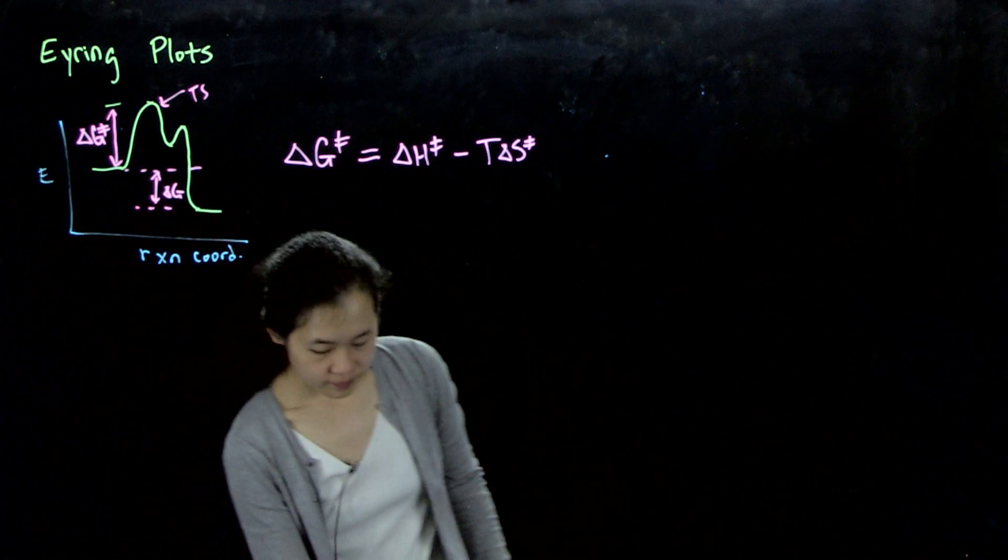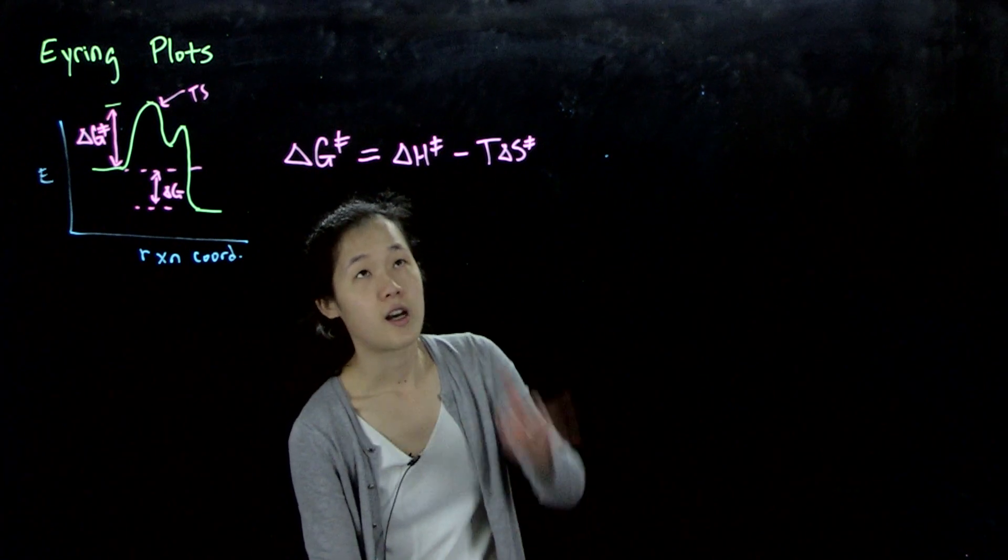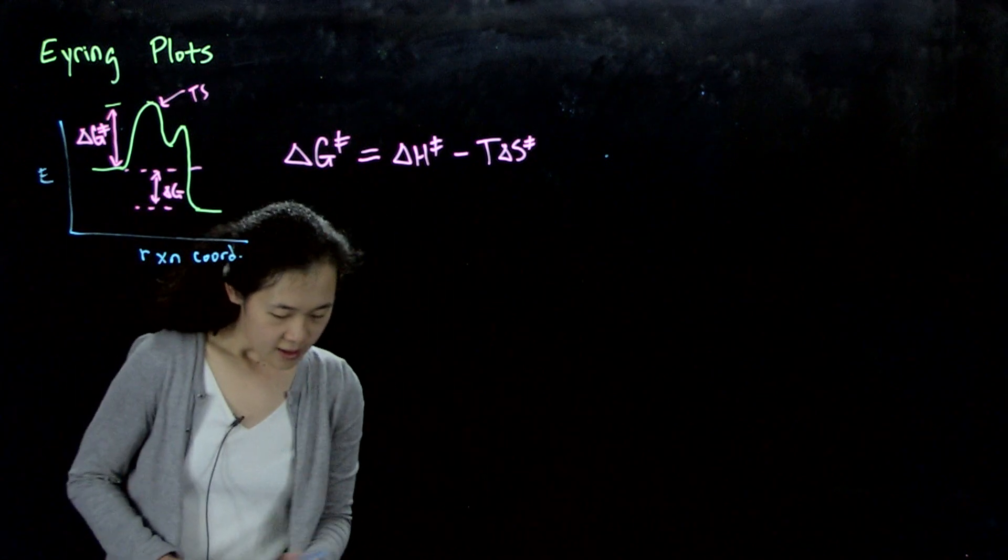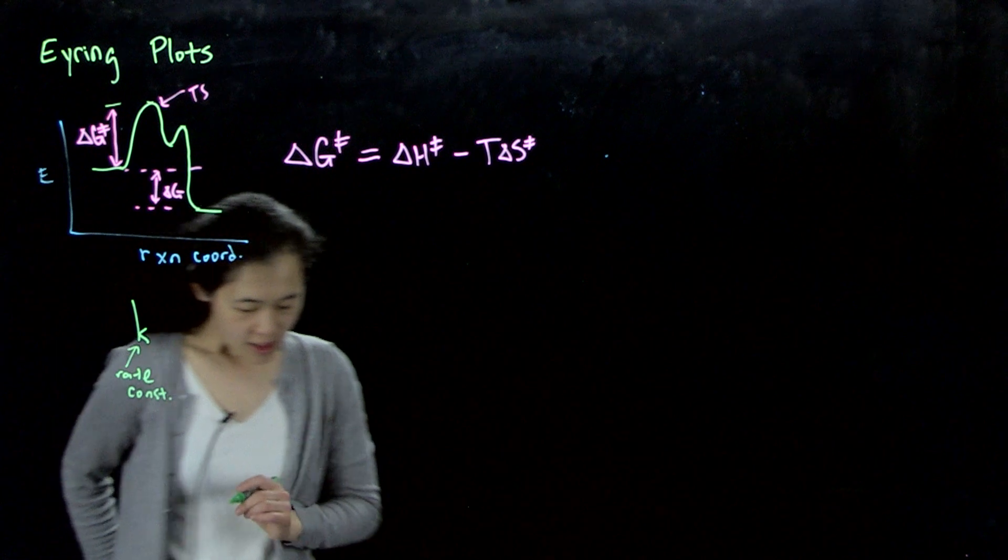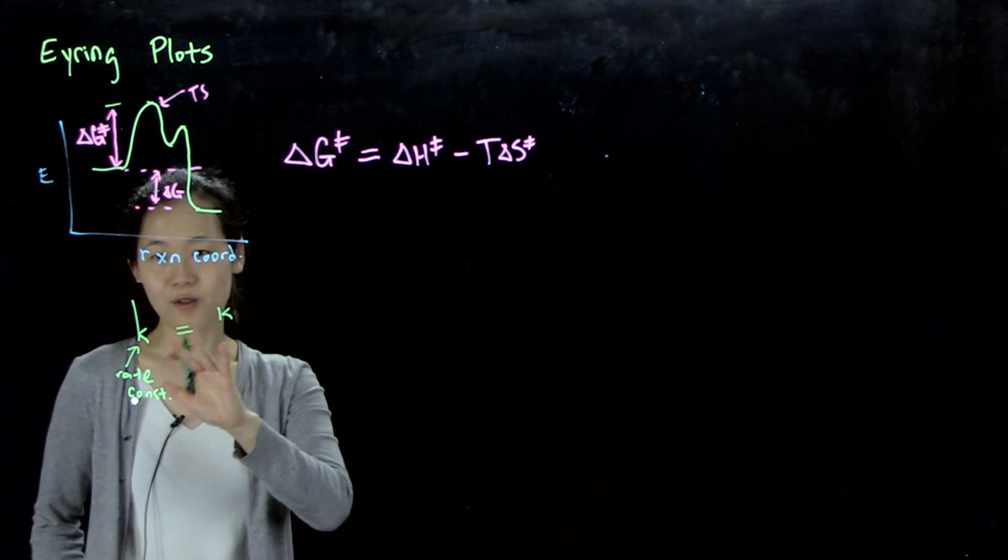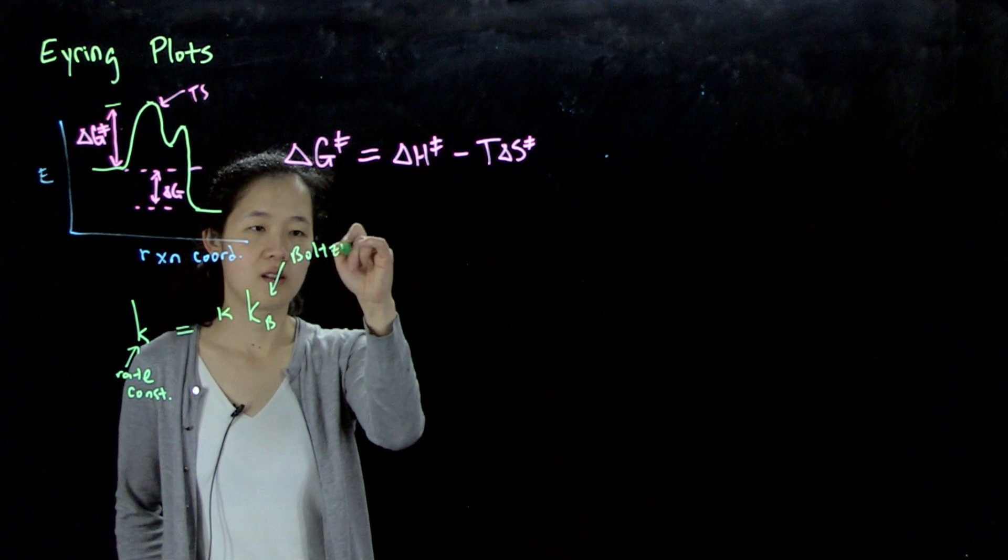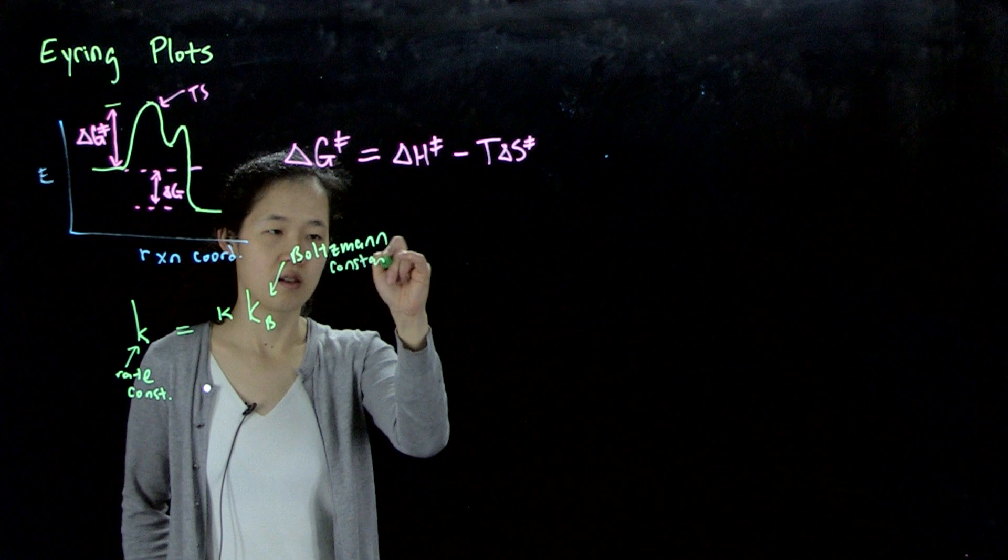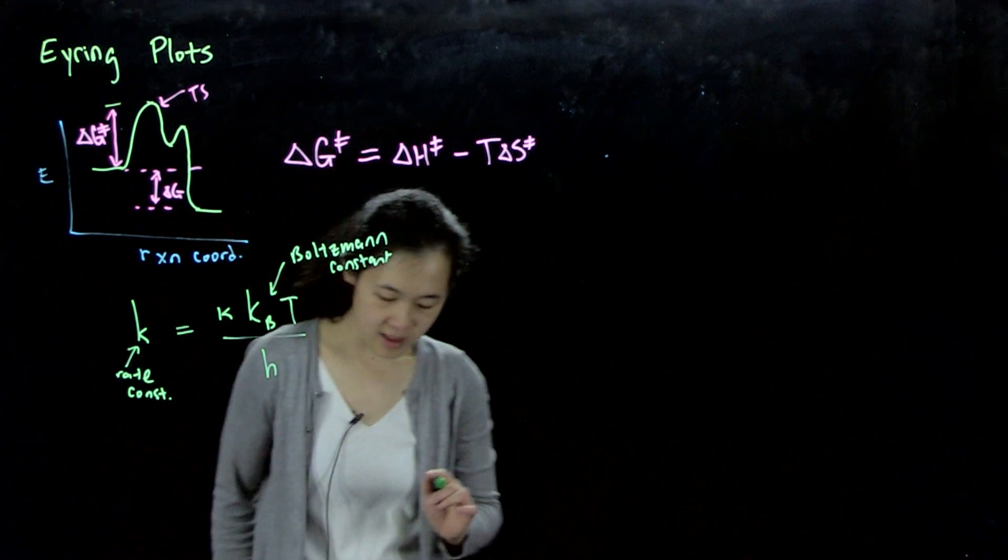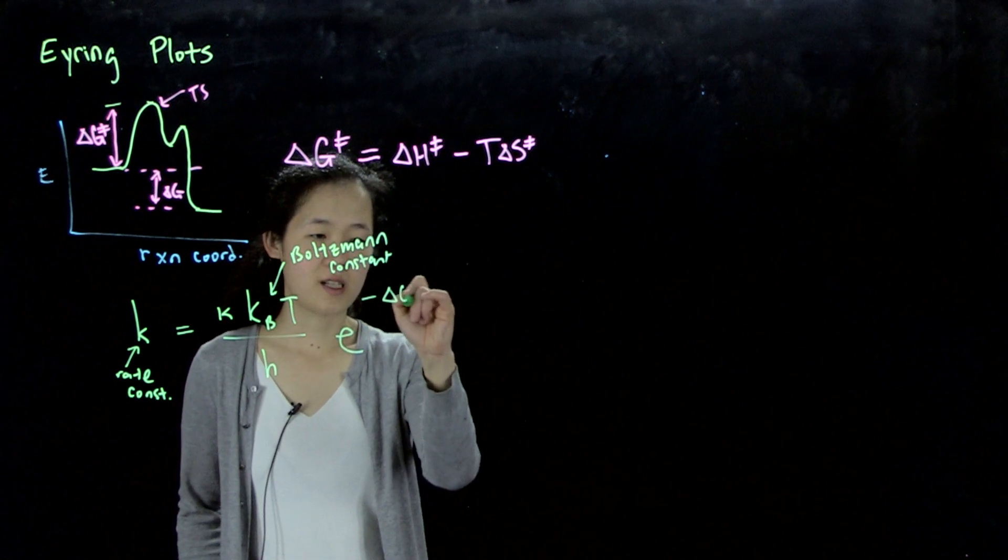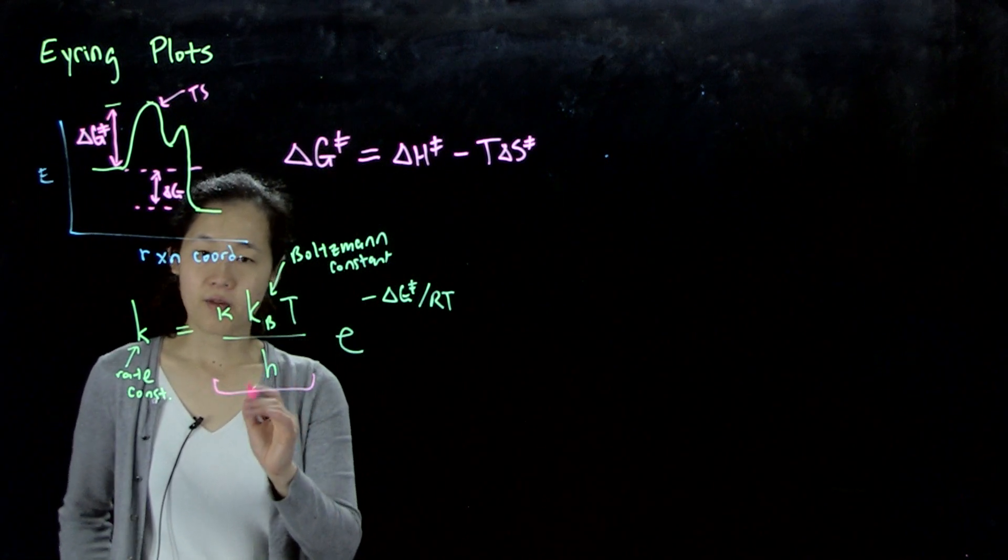So overall, the Eyring equation is similar to the Arrhenius equation, in the sense that we're relating our rate constant to this delta G double dagger. So the equation is, let me write it out. Again, we're relating rate constant. And then this equals some kappa term, we just ignore this for now. And then we have, this is the Boltzmann constant. And then, in this case, this coefficient is temperature dependent. So temperature over the Planck constant. And then we have another exponential, E to the negative delta G double dagger over RT. So this term, we won't go into how you derived it, but this has come from so-called transition state theory.